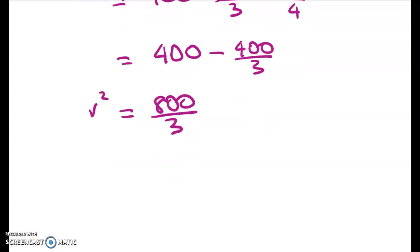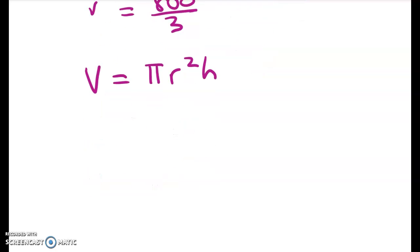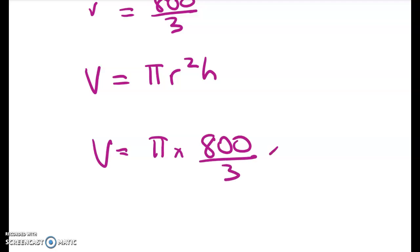So we're finished, right? And we didn't have to actually work out R squared explicitly. We were asked for the maximum possible volume of the cylinder. So V is equal to pi R squared H. So V is equal to pi times 800 over 3 times 40 over root 3.